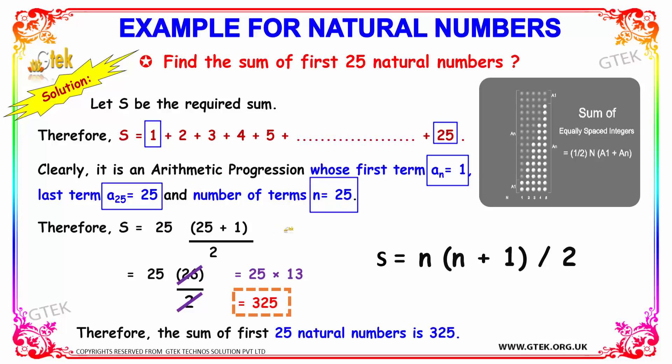Since it's an arithmetic progression, we know the formula to find the sum. The formula is S = n(n + 1)/2. By substituting the values in the formula, we can find it like this.